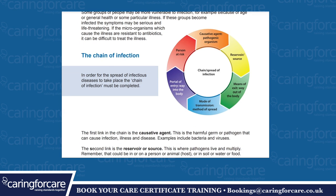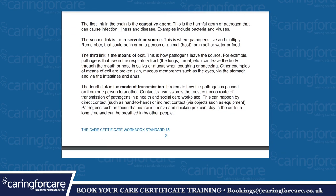In order for the spread of infectious diseases to take place, the chain of infection must be completed. The chain goes round with the following links: the causative agent — the pathogenic organism; the reservoir or source; means of exit — the way out of the body; mode of transmission — method of spread; portal of entry — the way into the body; and person at risk. The first link is the causative agent, which is the harmful germ or pathogen that can cause infection, illness and disease. Examples include bacteria and viruses.